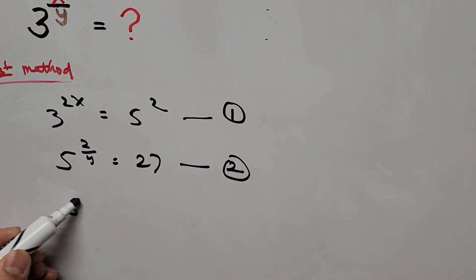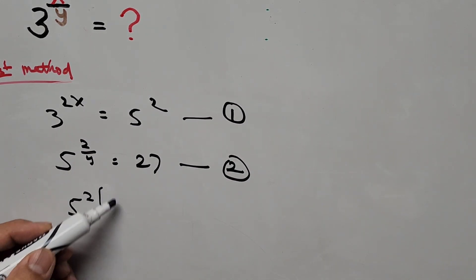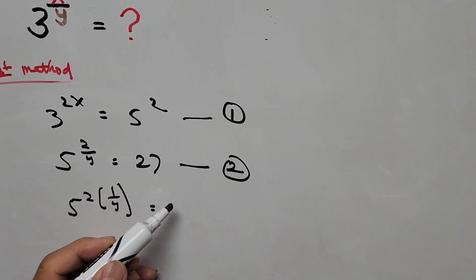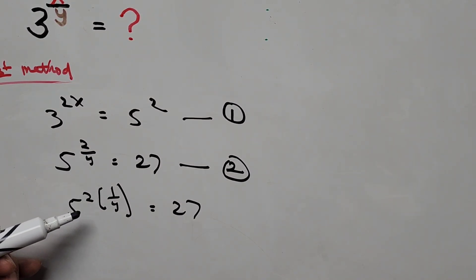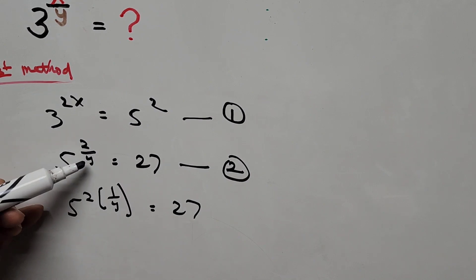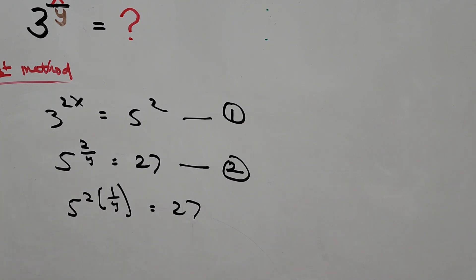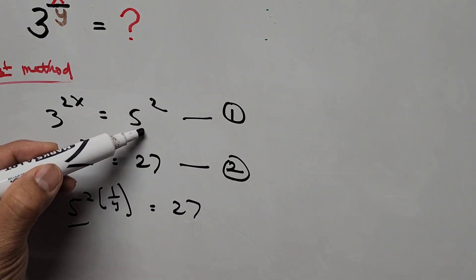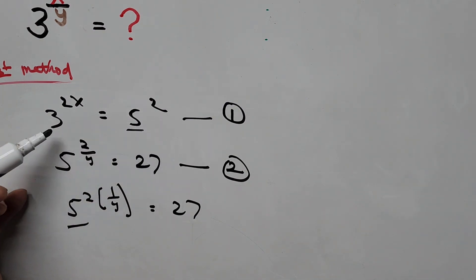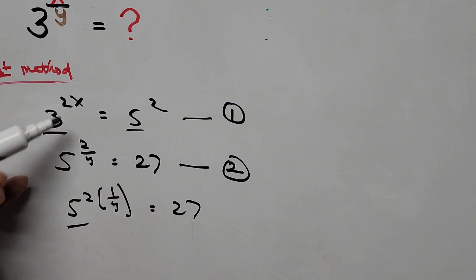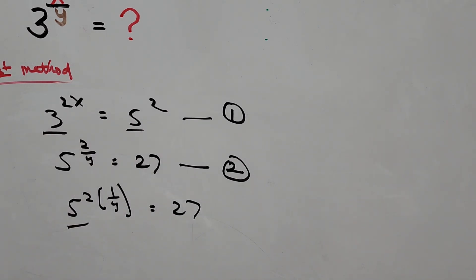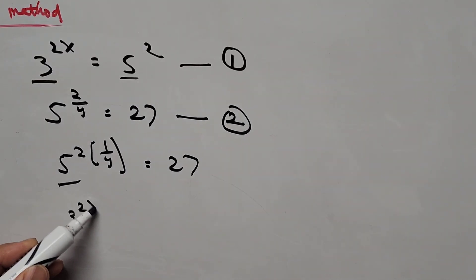Equation 2 can be written as 5 to the power of 2 times the quantity 1 over y equals 27. Notice the exponent is separated — multiplying 2 times 1 over y gives 2 divided by y. Now focusing on 5 squared: from equation 1, 5 squared equals 3 to the power of 2x. We use substitution, replacing 5 squared with 3 to the power of 2x.